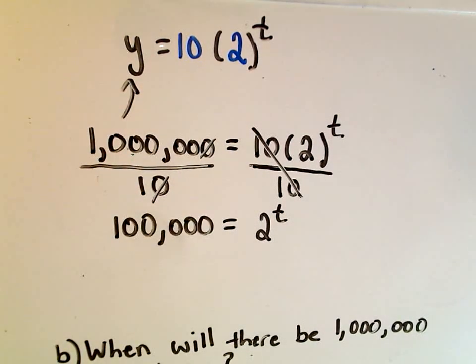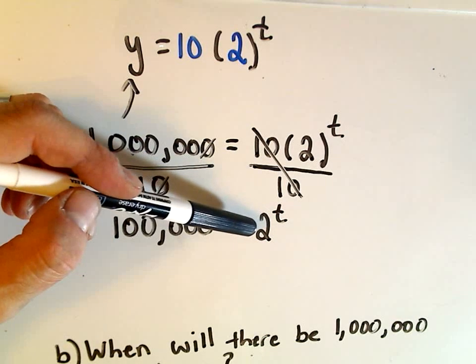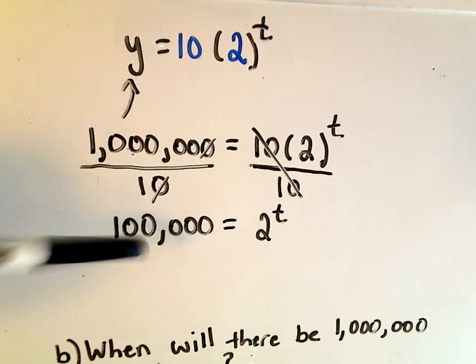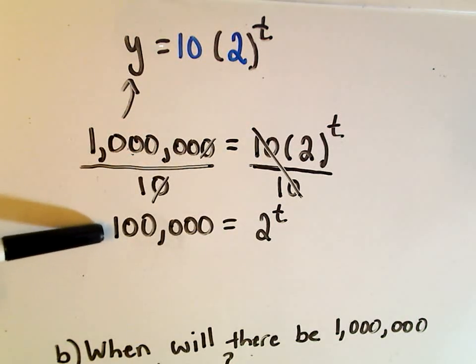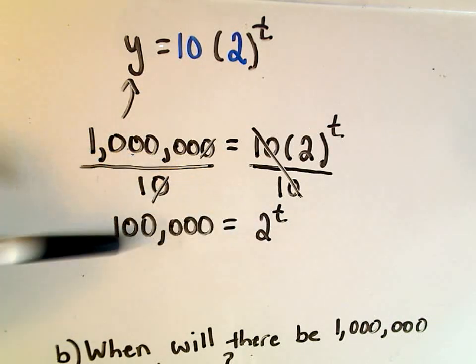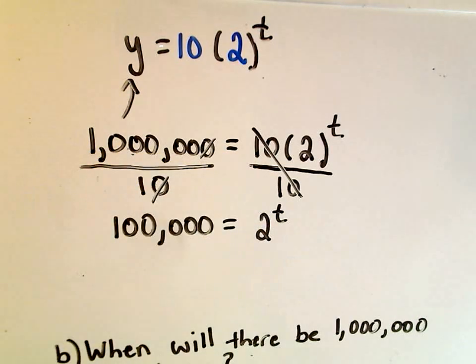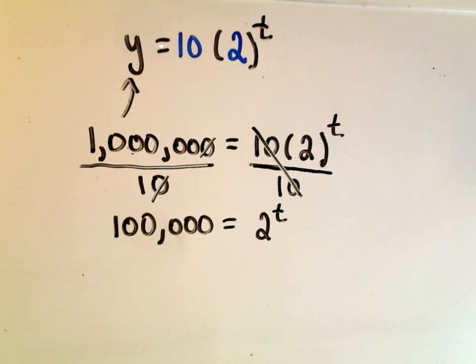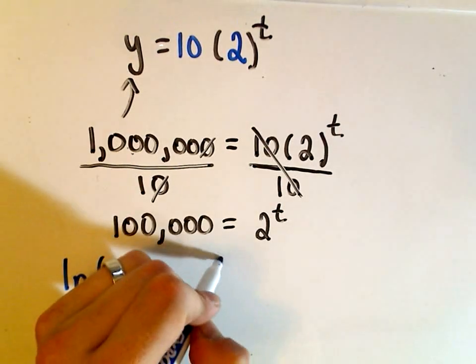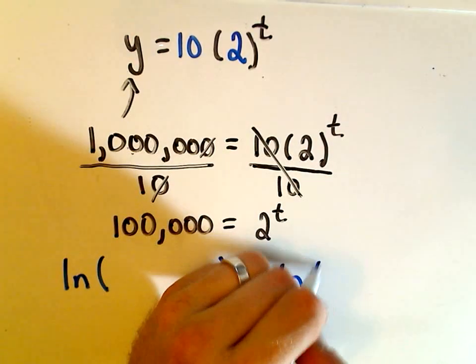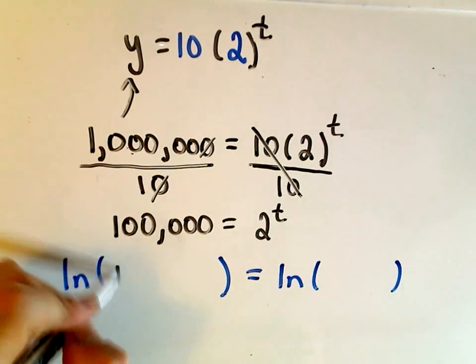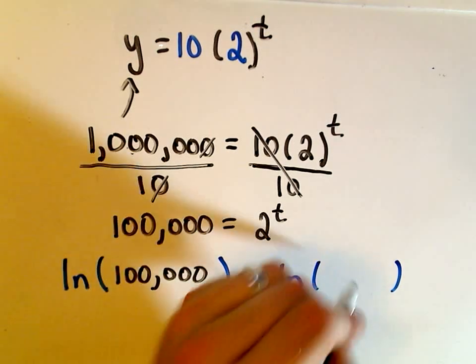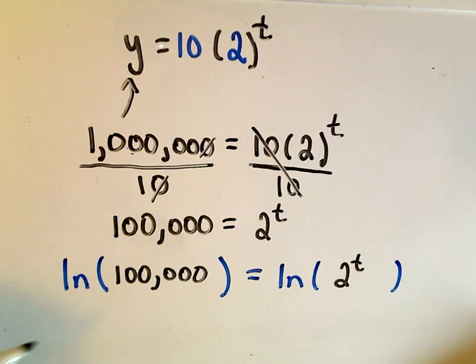And now we need to solve this for t. So again if you haven't seen logarithms you could just start plugging in values in your calculator, 2 to the 10th, 2 to the 11th, 2 to the 12th, and just keep going until eventually you're going to get, you'll go from a number a little bit smaller to a number a little bit bigger and you'll know okay, maybe it takes between 10 hours and 11 hours or 17 to 18 hours. But I'm going to do it the exact way and to do it the exact way we introduce logarithms. So we could use log base 10, I'm just going to use the natural logarithm. So I'm going to take the natural logarithm of the left side, I'm going to take the natural logarithm of the right side. So I'm just writing this ln in front of both parts.